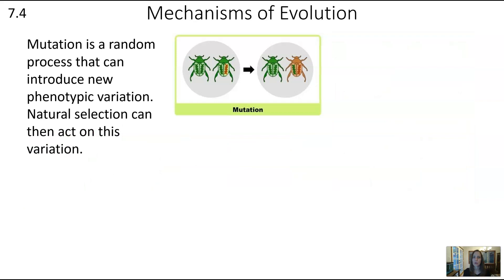We'll start with mutation. Mutation is a random process that can introduce new phenotypic variation. It's important to remember that natural selection can only act on the variation that already exists, so mutation is an important driver of change and diversity because it introduces those differences in the first place.